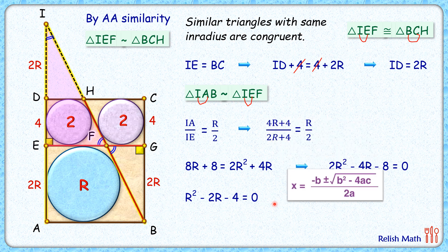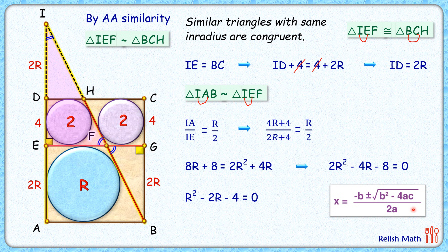Now to solve the quadratic, we can use our quadratic formula for the roots. Putting the values and simplifying, we'll get the radius of this blue circle as root 5 plus 1 centimeters, and that's my answer. I hope you enjoyed the solution. I will see you in the next video. Till then, tata, bye bye!